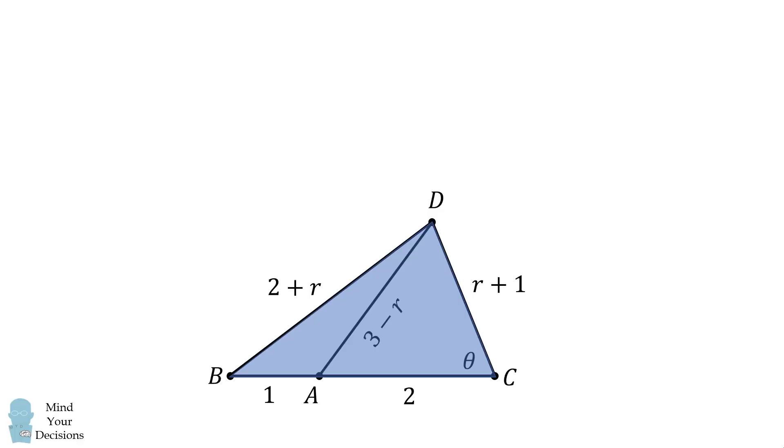We'll use Al-Kashi's law of cosines on the entire triangle BDC, and we'll label angle C as theta. Now, by Al-Kashi's law of cosines, the quantity (2 + r)² is equal to the quantity (r + 1)² plus 3² minus 2 multiplied by the quantity (r + 1), multiplied by 3, multiplied by the cosine of theta.